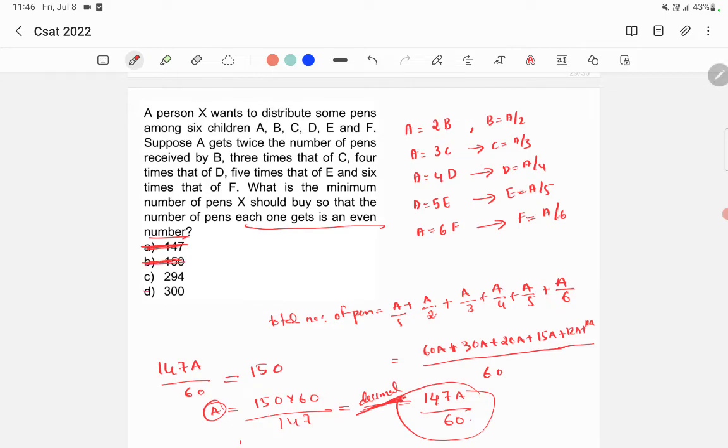Similarly, if you check option D is also wrong. If you put option C, 147A by 60 equals 294, you will get A equals 294 by 147 into 60. This is 2. You will get 120. So the answer is option C, 294.